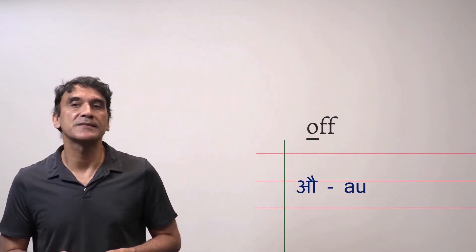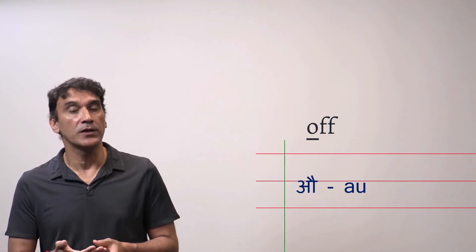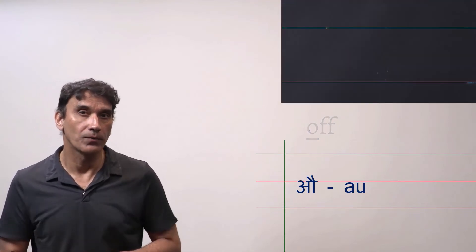The next vowel is au. In Hindi it is pronounced as au. So the sound is au. Let's see how it is written.